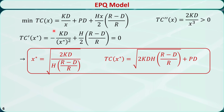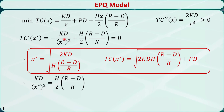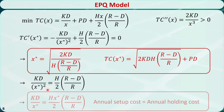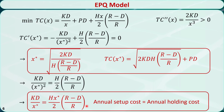Let's plug this value back into the objective function to get the minimum total cost. We can rearrange this equation, and multiplying both sides by x-star, we find that the left-hand side is the annual setup cost and the right-hand side is the annual holding cost. This means that at the optimal solution, the annual setup cost must be equal to the annual holding cost, so the total cost is minimized.